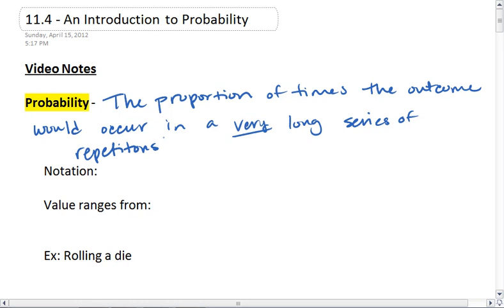Our notation is we use a capital letter P and then we do parentheses, and then inside the parentheses is what outcome we're looking for. And the values of this are going to range from 0 to 1.